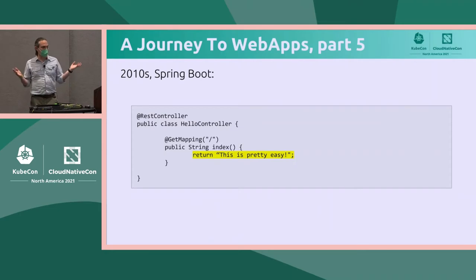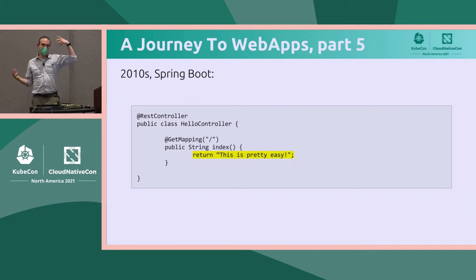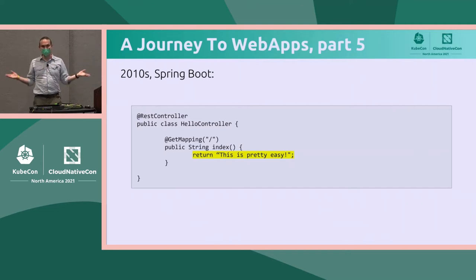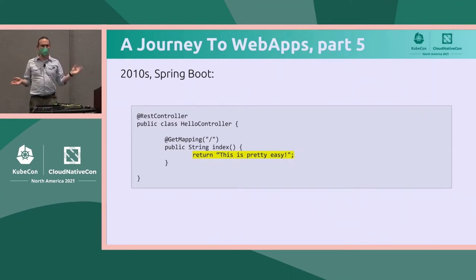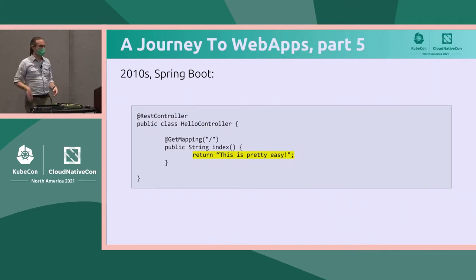Then Spring Boot came along and leveraged Java annotations, so now you can actually stick 'hey, this code is for slash' right next to the function that actually provides that output. This is pretty nice from a productivity point of view — there's no main anywhere listed. Somewhere there's a class annotated with Spring Boot Controller, and it just starts that up and wires everything together for you.